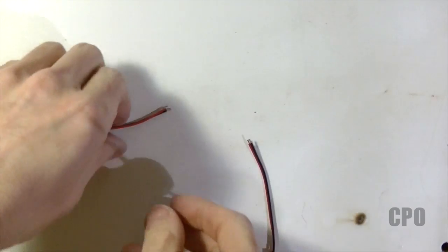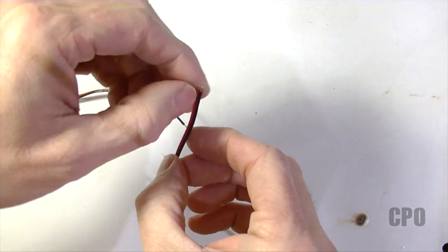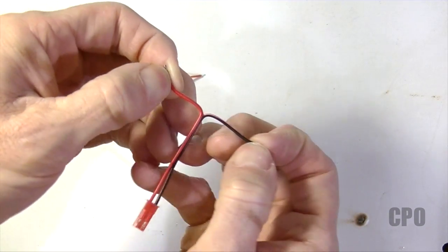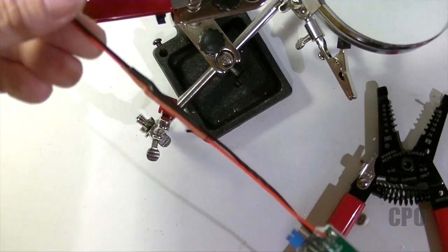So the last thing I want to do really quick is add the other side of that JST to my external BEC. And I'm just going to do this old school by stripping the ends of the wires, twisting them together, soldering them, and then shrink tubing them.